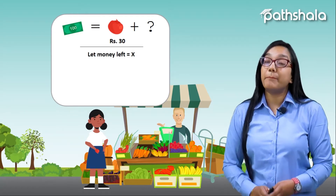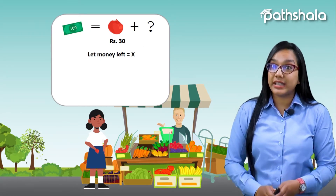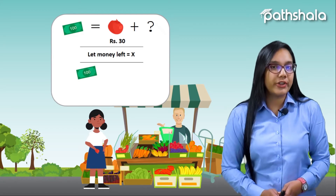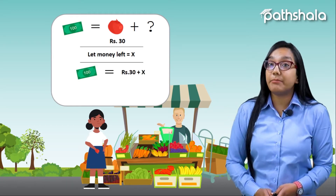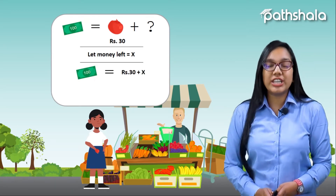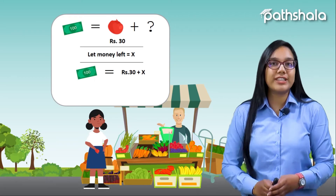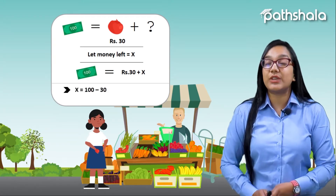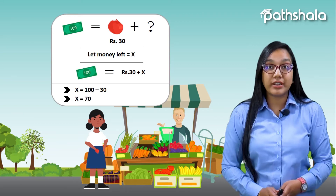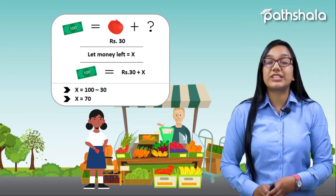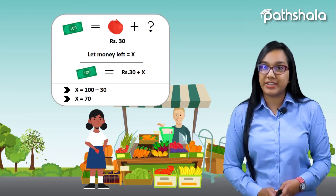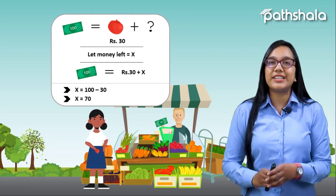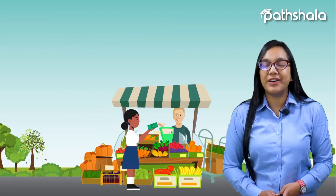She let that remaining money be x. Then the equation would be: 100 is equal to 30 plus x. She solved this equation as x is equal to 100 minus 30, which is equal to 70. So at the end, 70 rupees would be left with her.